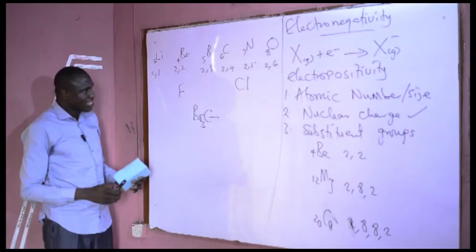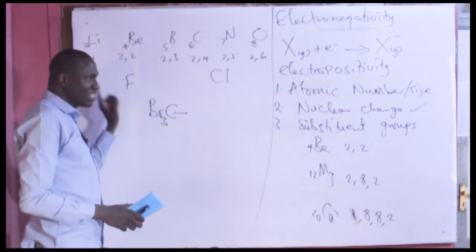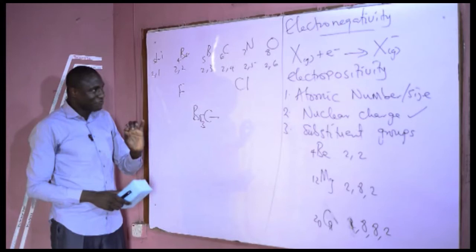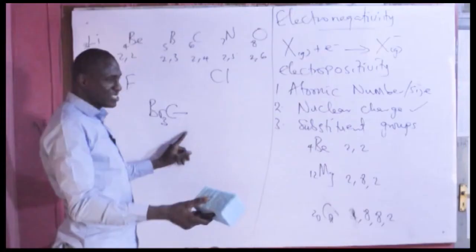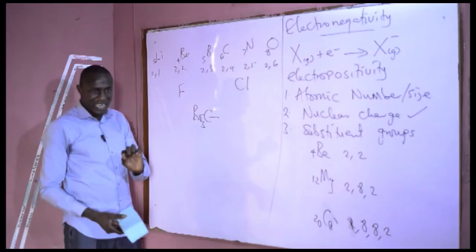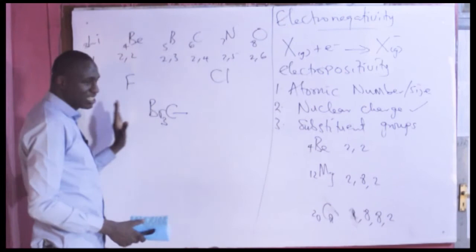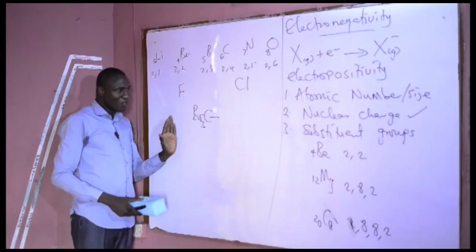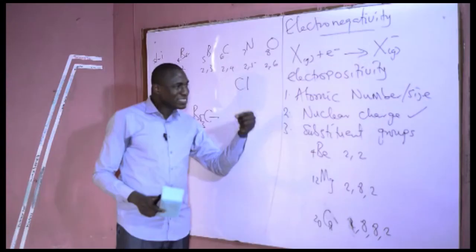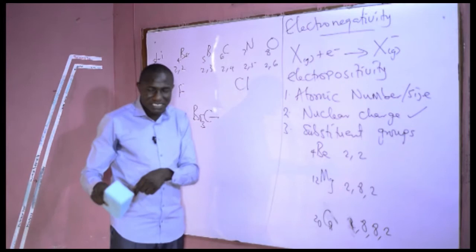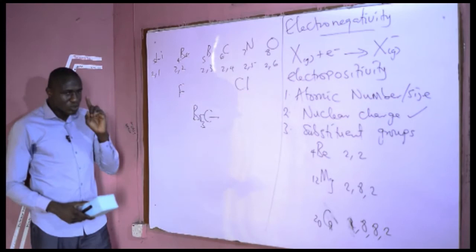Another important distinction is that electronegativity values differ from ionization energy and electron affinity. Electronegativity is a tendency — it is not an energy quantity. Electron affinity and ionization energy are energy quantities with specific units such as kilojoules per mole or electron volts. Electronegativity, by contrast, is dimensionless. Additionally, both ionization energy and electron affinity are properties of elements in their free state, while electronegativity is the property of an element in its combined state with other elements.